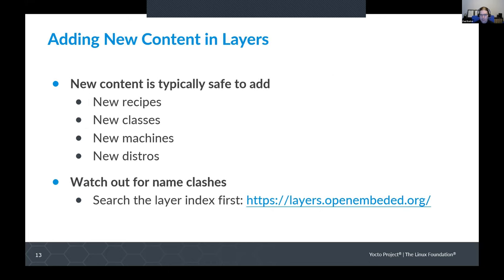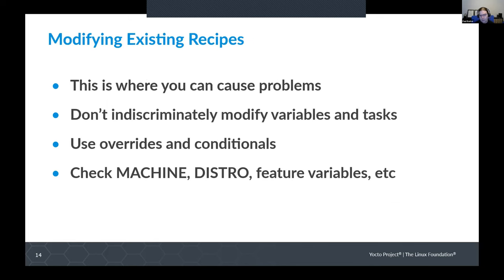If you're adding new content in layers — new recipes, new classes, new machines, new distros — it's usually fairly safe. But watch out for name clashes. If you're adding a new machine, check that the machine name isn't used in another layer somewhere, because it will then be quite difficult for someone who tries to combine those two layers.